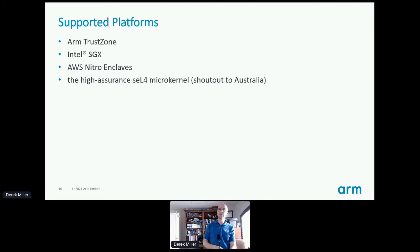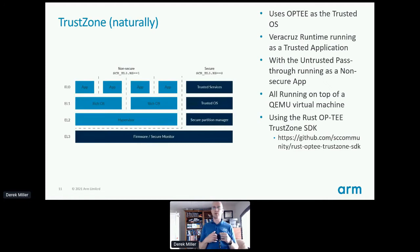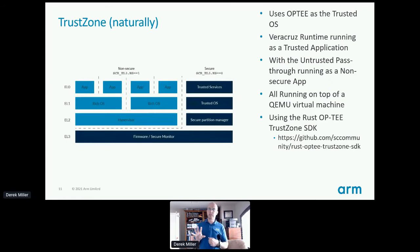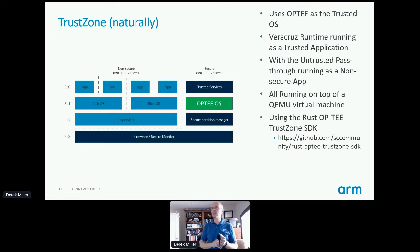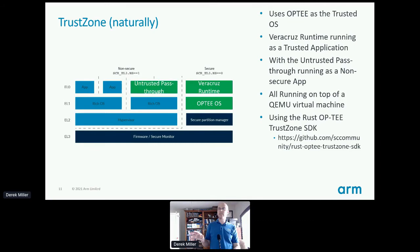TrustZone — naturally at ARM we have to talk about TrustZone. If you're familiar with it, the left side should be fairly familiar, but I'll do a quick overview. The light blue boxes are what we refer to as the non-secure world, and the rich OS boxes would be Linux instances or any other OS running there. The dark blue boxes are the secure world, including EL3, the firmware secure monitor, a secure partition manager, the trusted OS, and the trusted services. For our trusted OS we use the open-source OP-TEE OS. The Veracruz runtime runs as a trusted application inside secure EL0, and an additional component is the untrusted pass-through which runs as an app on top of the rich OS — it's a Linux application.